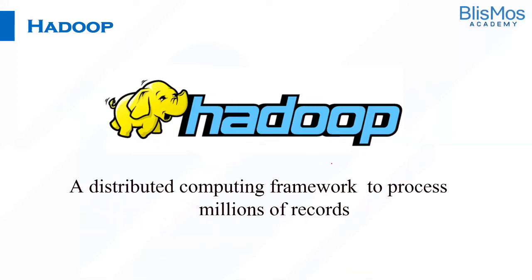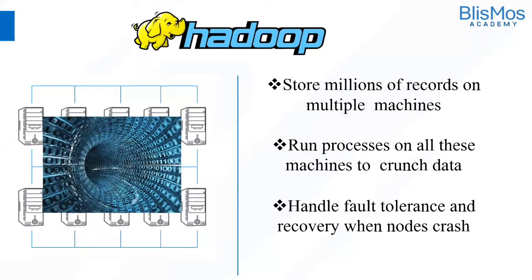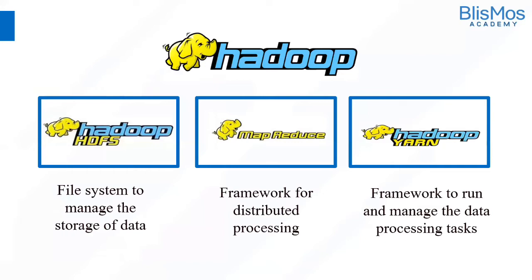Hadoop is a distributed computing framework to process millions of records. It stores millions of records across multiple machines, runs across them to crunch the data, and is fault tolerant — whenever a node crashes, it quickly recovers. Hadoop has three important components: HDFS, MapReduce, and Hadoop YARN, all installed by default.